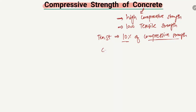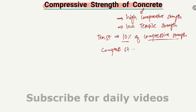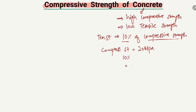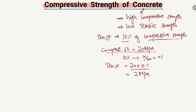For example, if the compressive strength of concrete is 20 MPa, then the tensile strength is taken as only 10% of that. So 20 multiplied by 0.1 gives us 2 MPa. When we have concrete with a compressive strength of 20 MPa, its tensile strength is taken as 2 MPa for design purposes.